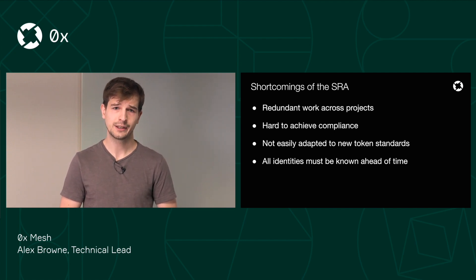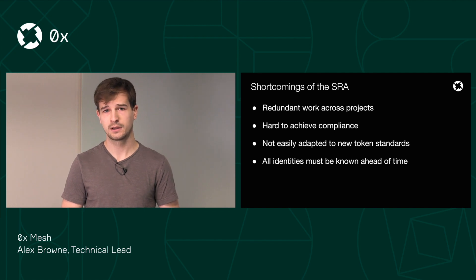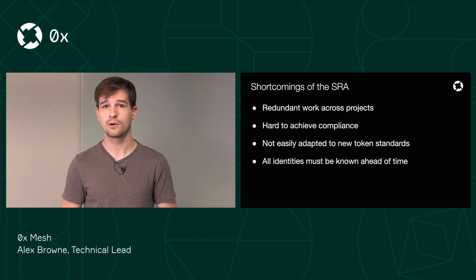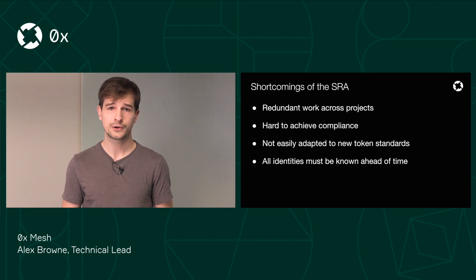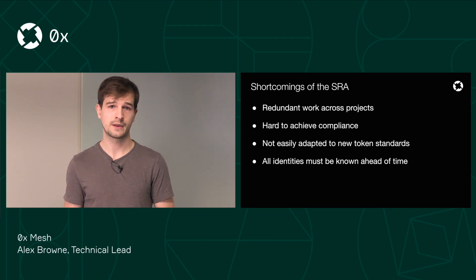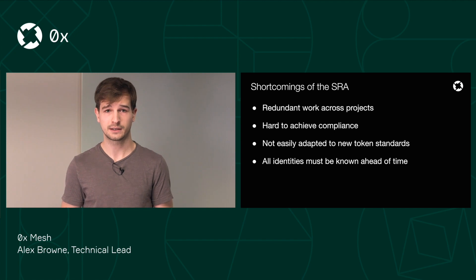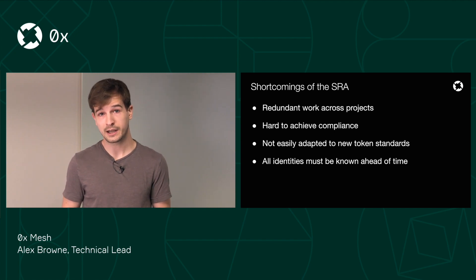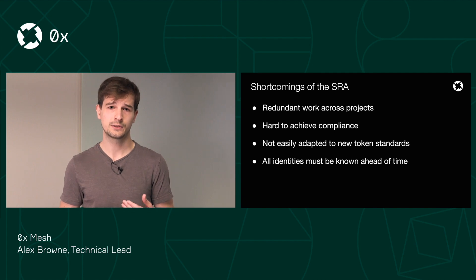Finally, for relayers that want to share orders with one another, using the SRA to do this means that they have to know all the identities ahead of time. If you want to pull orders from somebody else's SRA endpoint, that's fine, you can do that. But if you want the opposite to be true and you want them to pull orders from your SRA endpoint, you actually have to contact them — typically in real life — and tell them about your endpoint and ask them to use it. It's a really slow and manual process.